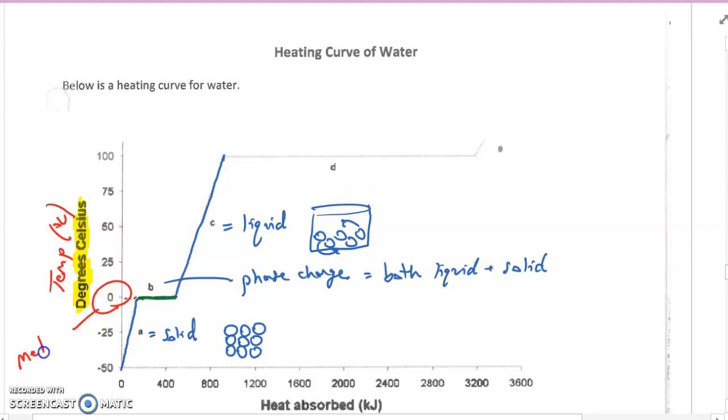This we either call the melting point or the freezing point, depending on which direction we're looking at these graphs in. Going from a solid to liquid would obviously be the melting point. Going from a liquid back to a solid would be the freezing point.